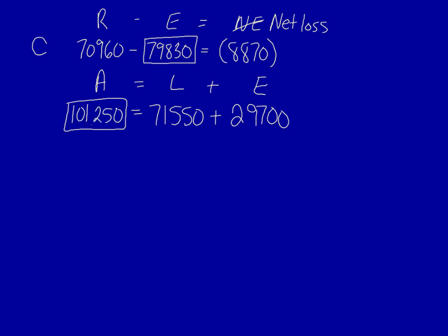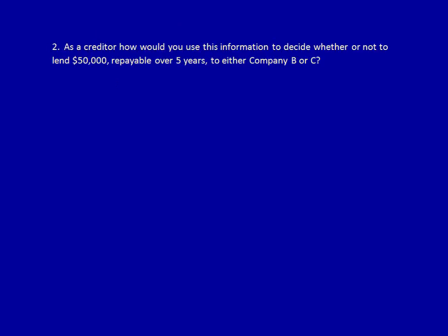Excellent. Let's move on to the next question. As a creditor, how would you use this information to decide whether or not to lend $50,000 repayable over five years to either Company B or C?